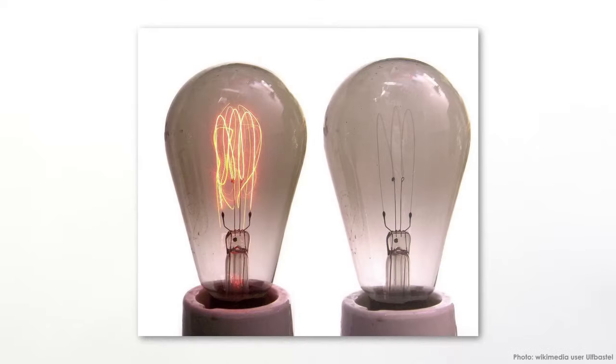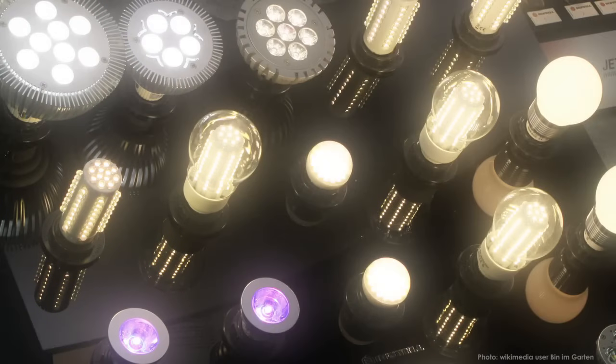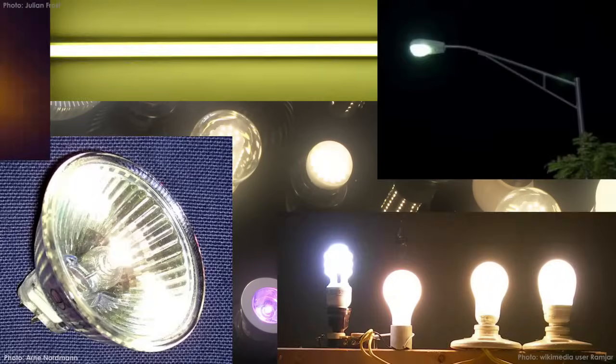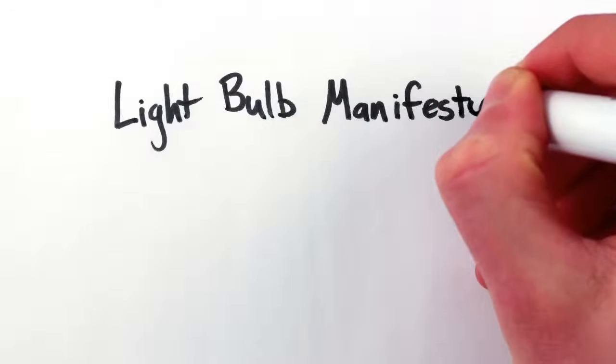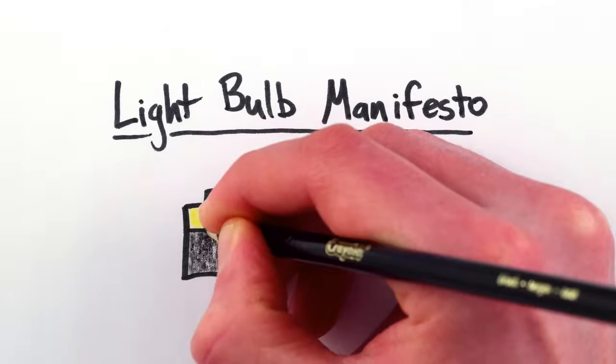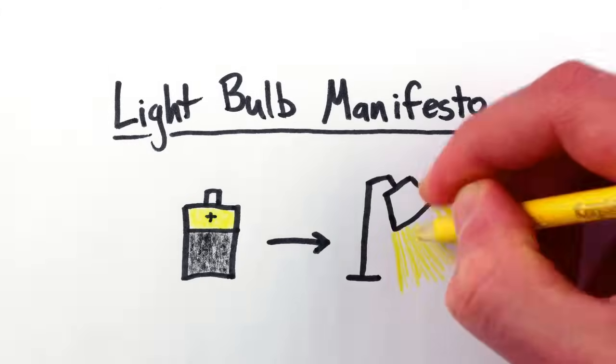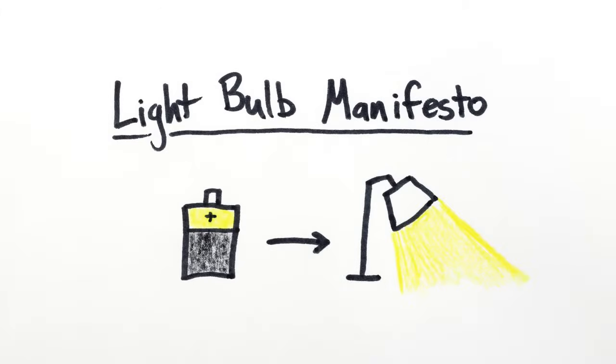So the incandescent light bulb is 19th century technology, and by now there's a blinding array of electric lamps – halogen light bulbs, fluorescents, mercury and sodium vapor lamps, LEDs, and so on. Each one makes its own clever use of physics to achieve the life goal of a light bulb, converting electrical current into visible light. Here's how they work.